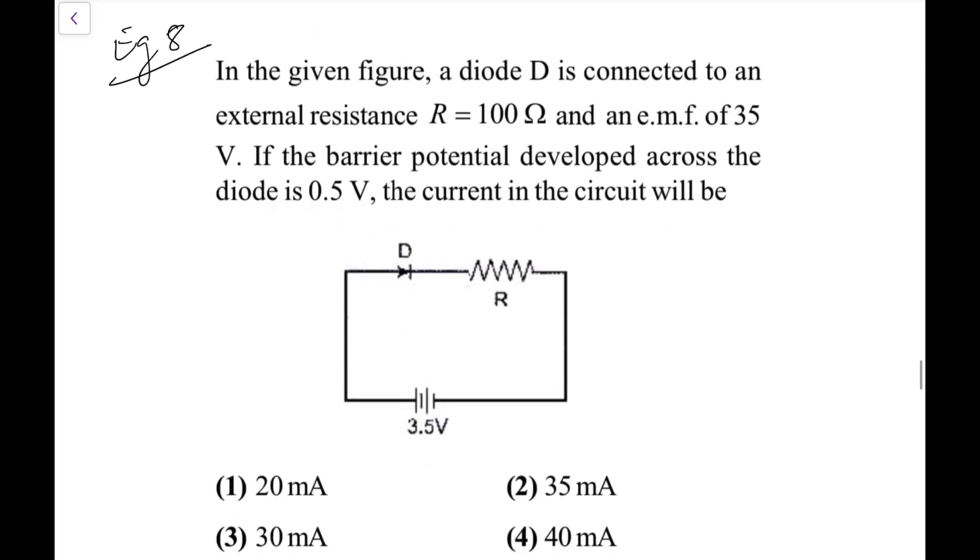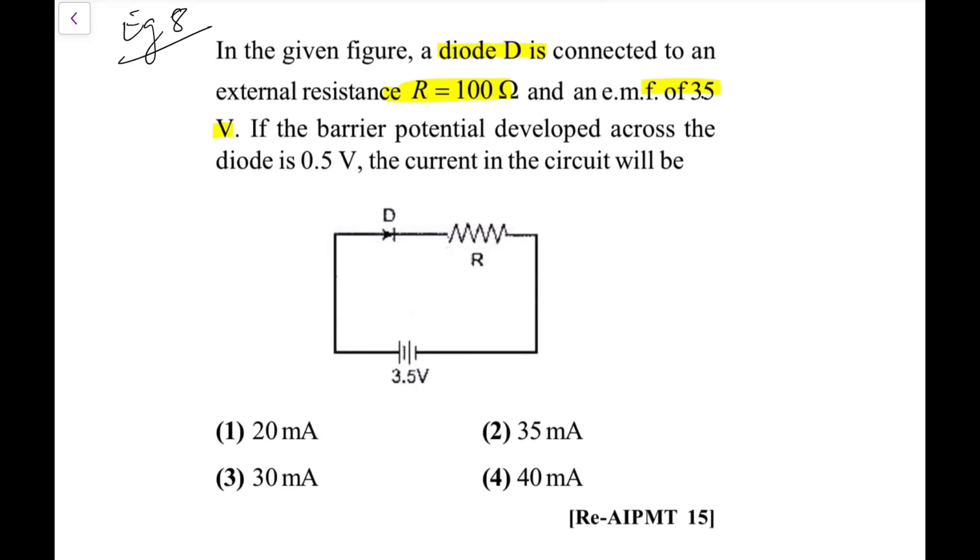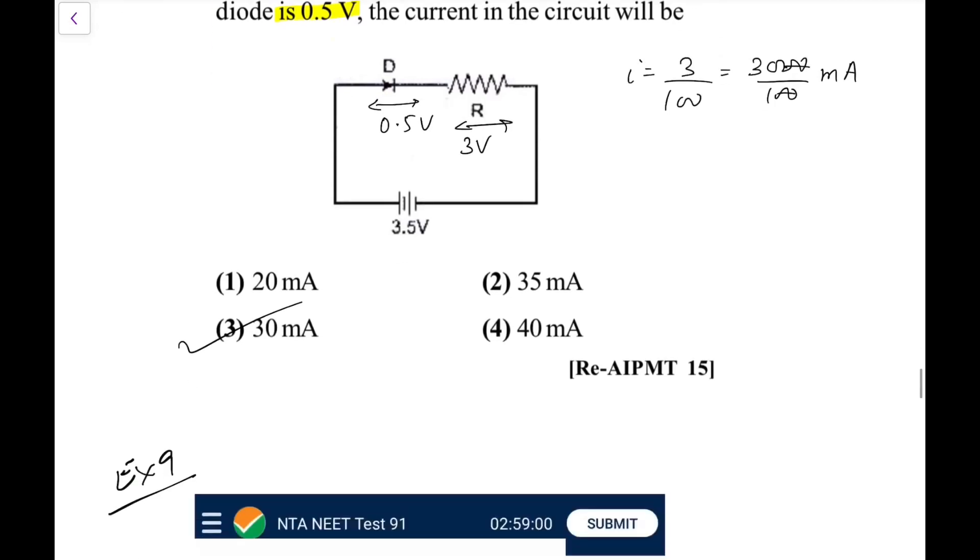Next one, in the given figure a diode is connected to an external resistor R 100 ohms, emf 30 volt - this is a emf of 3.5, I think this 35 is a printing mistake from my end, 3.5. If the barrier potential, now this is important, barrier potential across the diode is 0.5, that means even it is forward bias, you have to take the drop as 0.5. So on this resistor the drop is 3 volt. So the current would be 3 upon 100. So that comes out as you can say 3000 by 100 in milliampere terms. So that is 30 milliampere. Go for option 3, this is the question from AIPMT 2015.